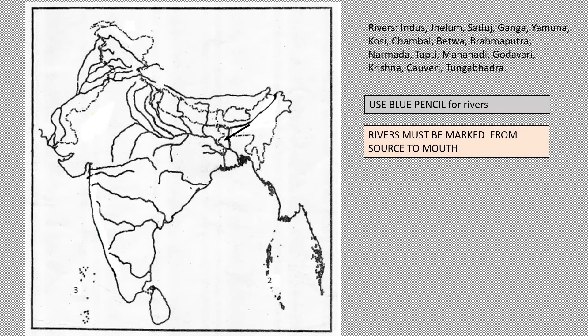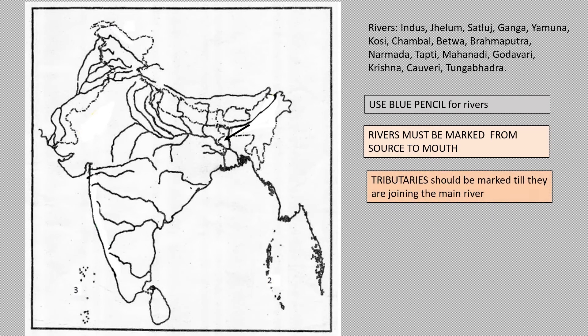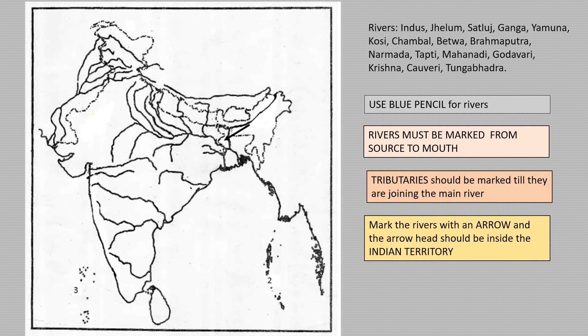River must be marked from the source to mouth — that means from where it starts till the end. Tributaries should be marked till they join the main river. I have used a darker color for tributaries so you can tell which is the main river and which is the tributary. Mark the rivers with an arrow, and the arrowhead should be inside Indian territory — that is very, very important.